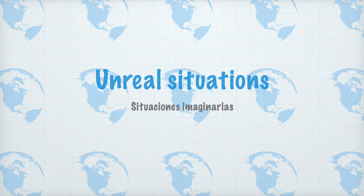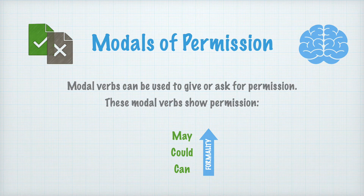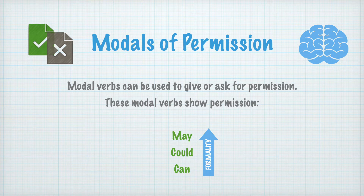This topic corresponds to the block on real situations. Este tema corresponde al bloque situaciones imaginarias. Modals of permission. Modales de permiso. Modal verbs can be used to give or ask for permission. These modal verbs show permission: can, could, may. Los verbos modales pueden ser usados para pedir o dar permiso. Estos verbos modales muestran permiso: may, could, can. En grado de formalidad.